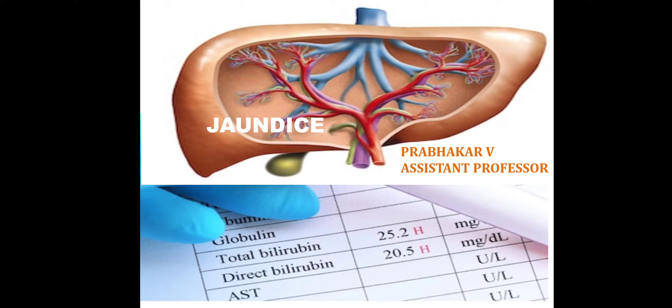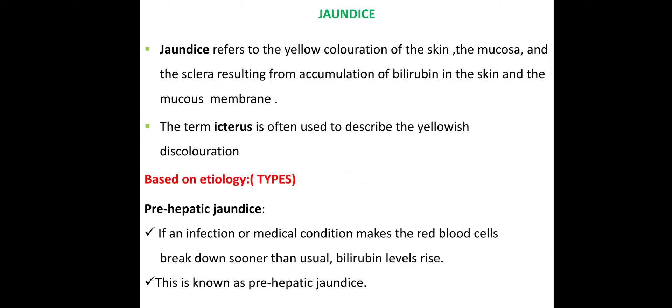In this normal process, if there is a deficit or deviation, that is what we call jaundice. The normal bilirubin level is 2.0 mg per gram in blood. Jaundice is the yellow coloration of the skin, the mucosa, and the sclera resulting from the accumulation of bilirubin. When bilirubin accumulates excessively, that's why our skin and mucous layer show a yellowish color pigmentation.